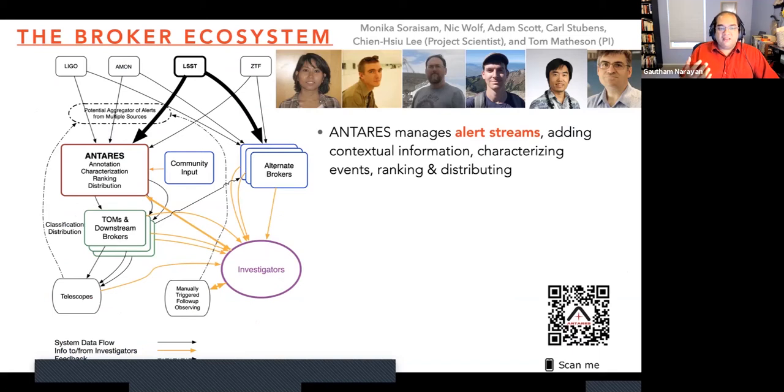Brokers are the things that are receiving the alerts from these big surveys like LSST or ZTF or through other groups like AMON, which is another multi-messenger monitoring network that I think you heard about in the last CTA colloquium. And what brokers then do is manage these illustrations. They add contextual information. They help you characterize these sources. They want to annotate, rank and distribute and classify them to the community. So the community can listen to this directly, but you can also have completely automated pipelines listening to these things, things like telescope observatory managers or TOMs, which connect directly to telescopes for automatic follow-up.